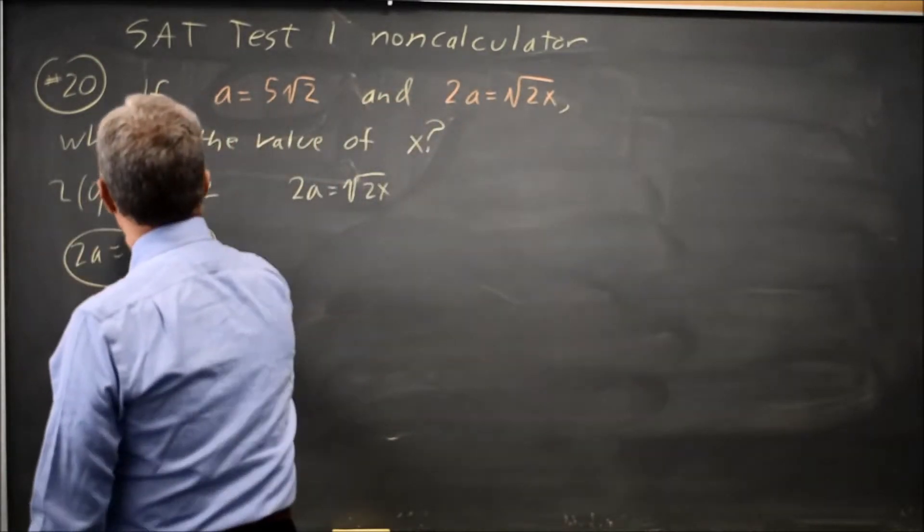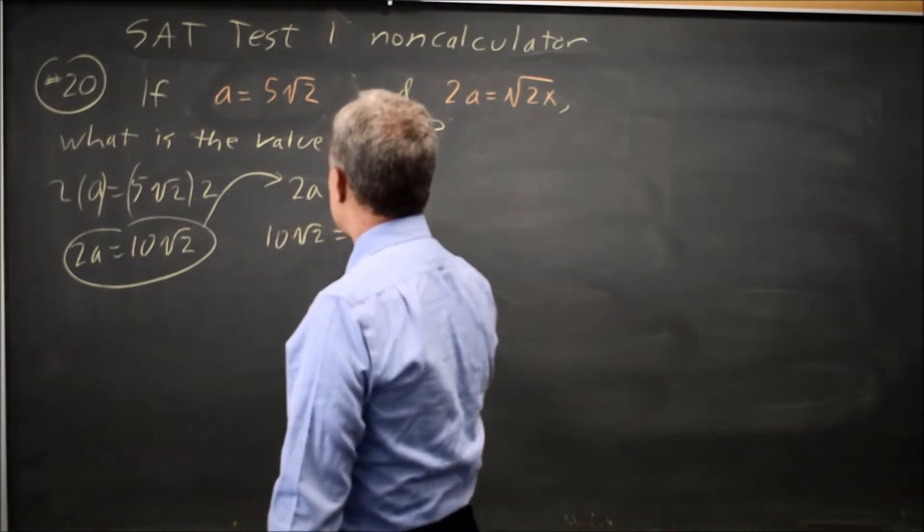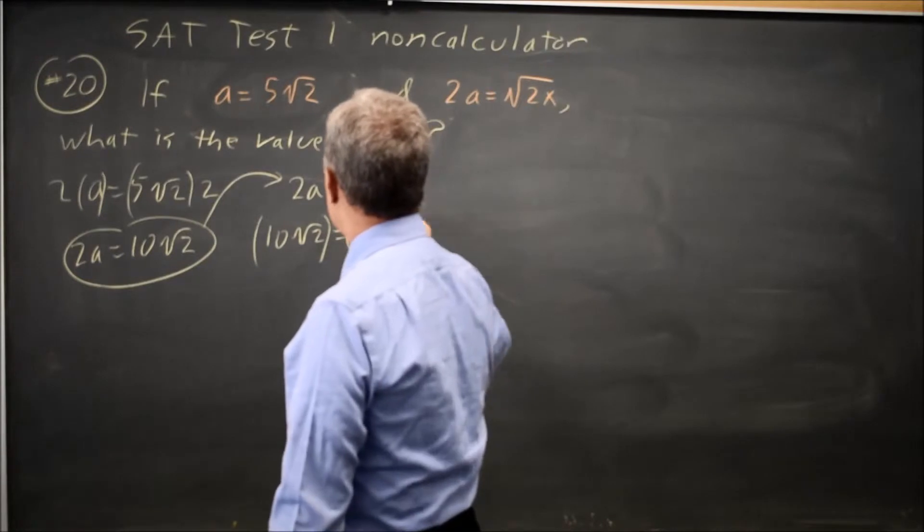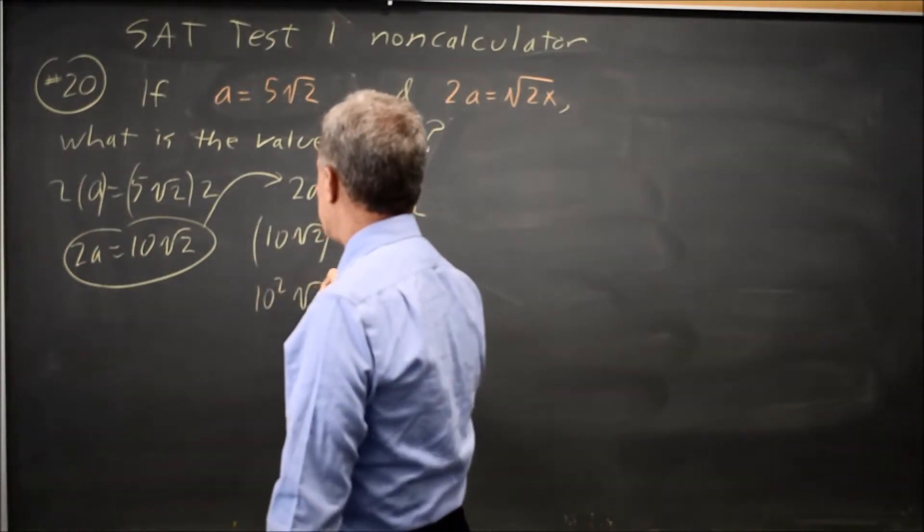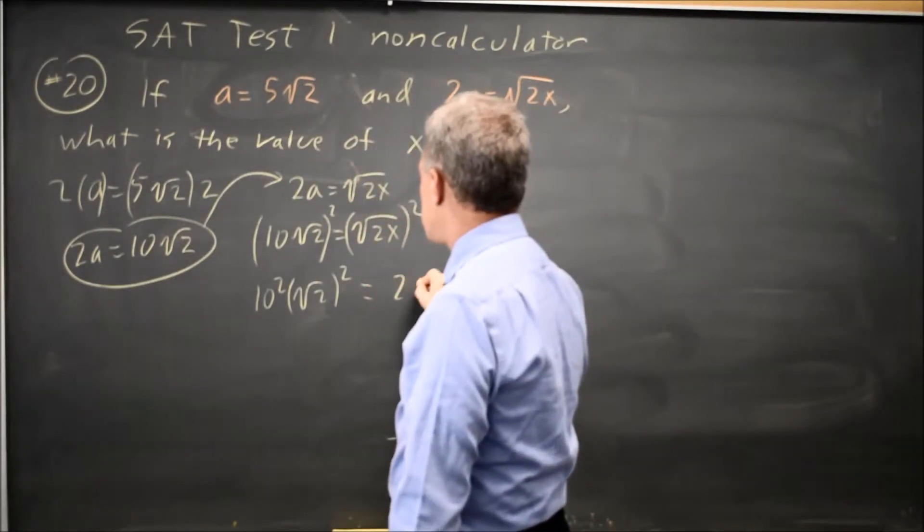If I substitute this expression in for 2A on the left, I get 10 root 2 equals root 2X. Now let's square both sides of that equation and I get 10 squared root 2 squared equals, the square root squared is 2X.